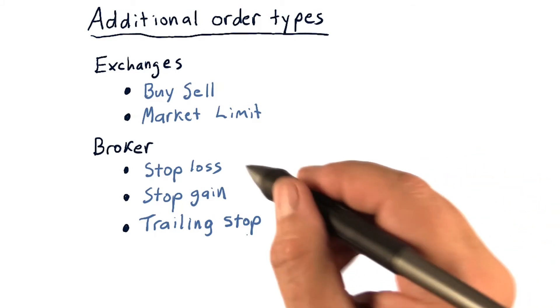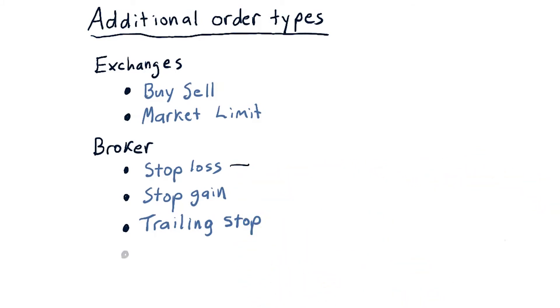But when it drops down below, then that stop loss is triggered. But probably the most important and most impactful kind of order the brokers implement for you is something called selling short.